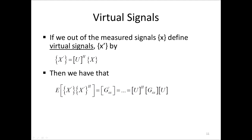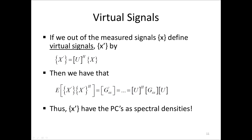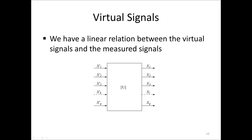You should recognize this equation: X' have the principal components as their spectral densities. The virtual signals are uncorrelated since the matrix G'XX is diagonal. The eigenvector matrix U can be seen as a MIMO linear system with virtual signals as inputs and actual input signals as outputs. Note that we cannot measure the virtual signals, but we can estimate their PSDs and other useful quantities.